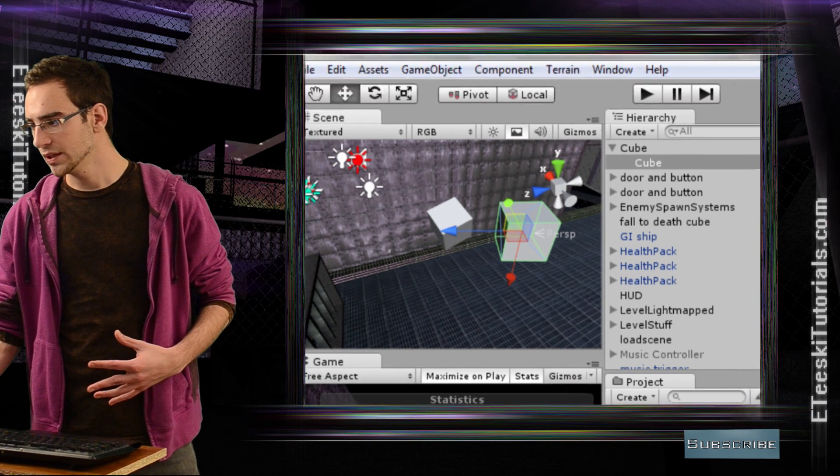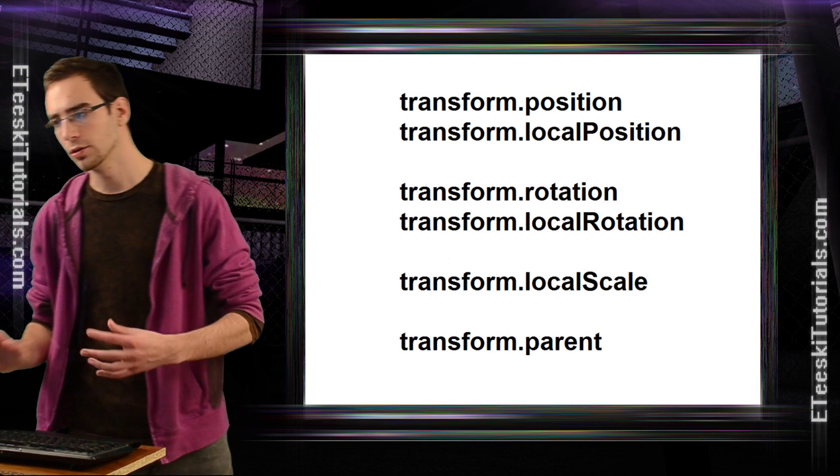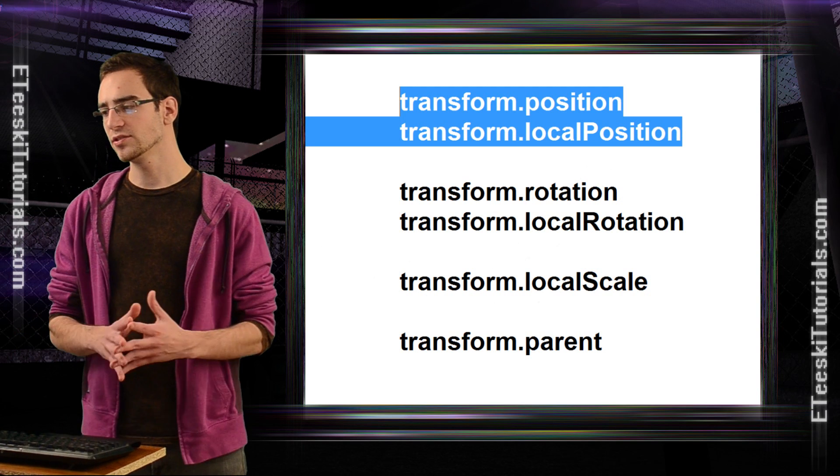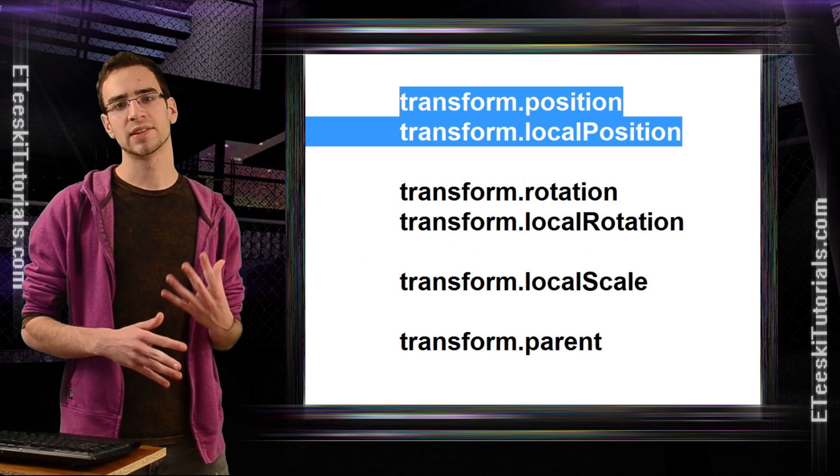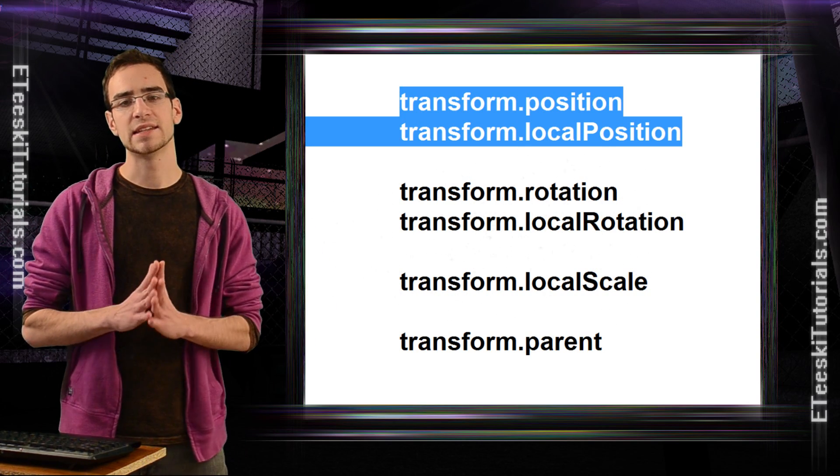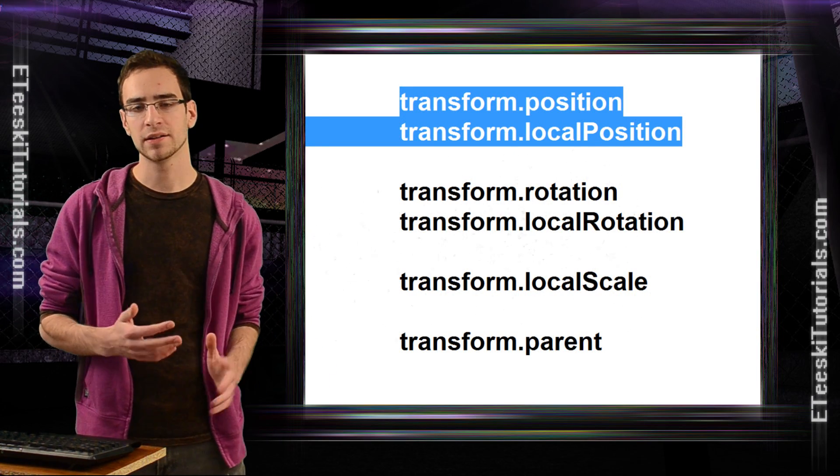Let me minimize that and let me show you kind of what it looks like in code. The first two lines of code that we're going to look at is transform.position and transform.localPosition. So transform.position is going to give you back a vector3 that represents wherever that game object is in real world 3D space, regardless of where its parent is.